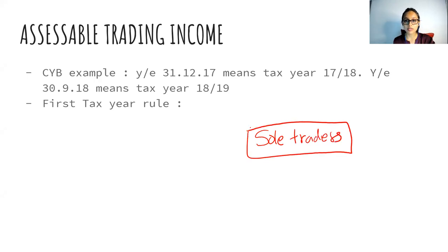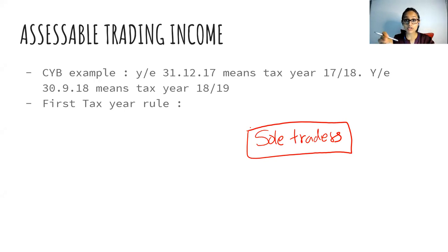Accessible trading income chapter. One main issue students face is: what are we doing in this chapter? There are a lot of dates here and there. We are actually using this chapter for sole traders or businessmen — they have their accounting periods in different time periods. This is about trading income for sole traders.